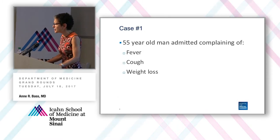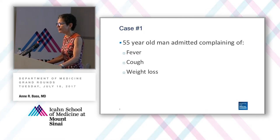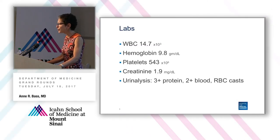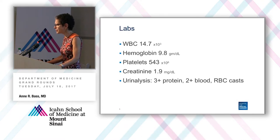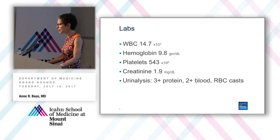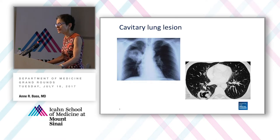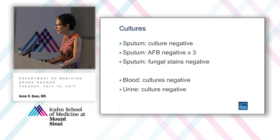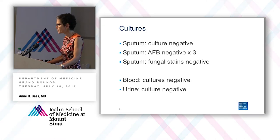I'll start with a case. This is a 55-year-old man admitted complaining of fever, cough, and weight loss. His white count is 14.7, hemoglobin 9.8, platelets 543,000. He's got renal insufficiency, creatinine 1.9, and an active urine sediment: 3-plus protein, 2-plus blood, and red cell casts. On chest X-ray there is a cavitary lung lesion, which you can see on CT as well. Cultures are completely negative — sputum for bacteria, AFB, fungus, blood, and urine cultures are negative as well.